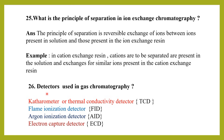What are the detectors used in gas chromatography? Detectors in GC include the catharometer (thermal conductivity detector), flame ionization detector, argon ionization detector, and electron capture detector. Please prepare well for these detectors, as questions about their functioning are commonly asked.